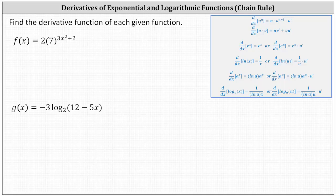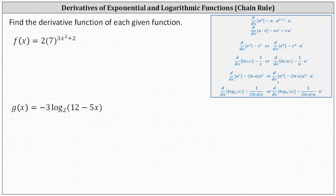Looking at our derivative formulas on the right, because we don't have base E, we're not going to use the derivative formulas where the base is E. We'll use the derivative formulas where the base is A. And because the exponent is not just x — it's three x squared plus two — we have a composite function, and therefore we have to apply the chain rule. We'll use the derivative formula that includes the chain rule, which is: the derivative of A to the power of U with respect to x equals natural log A times A to the power of U times U prime.